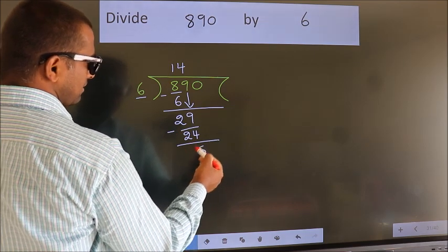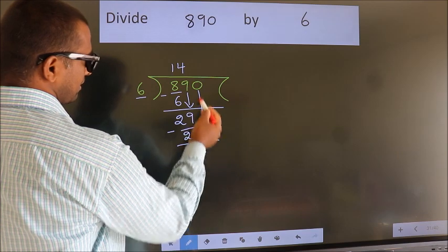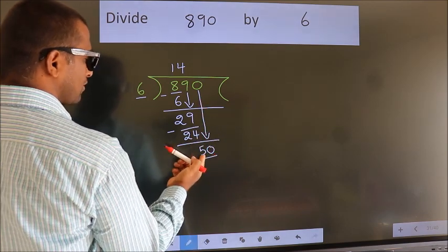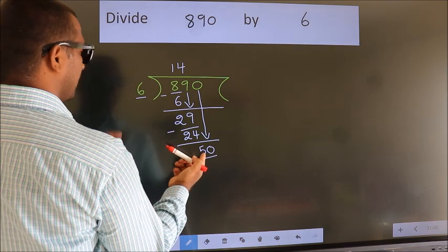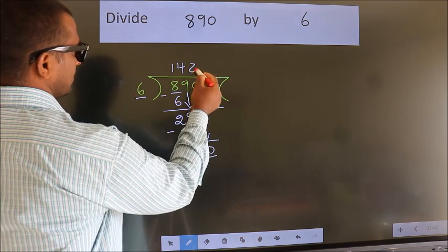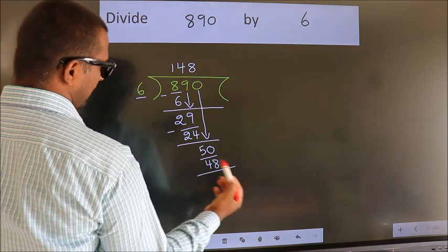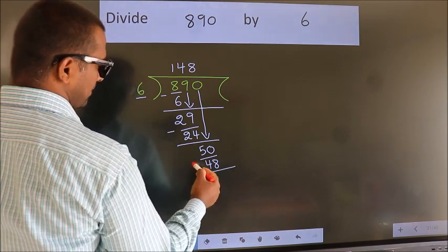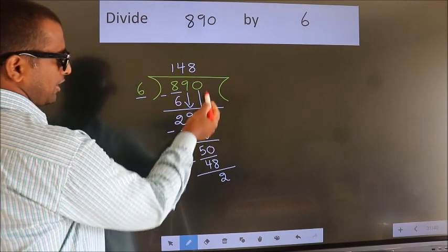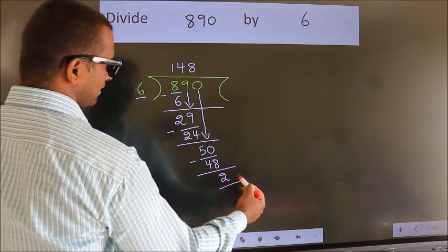After this, bring down the beside number — so 0 down. So 50. A number close to 50 in the 6 table is 6 × 8 = 48. Now we subtract. We get 2. No more numbers to bring down, so we stop here.